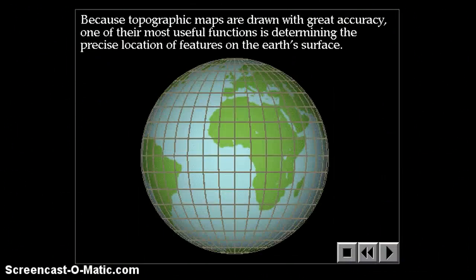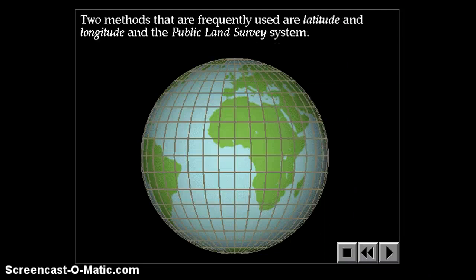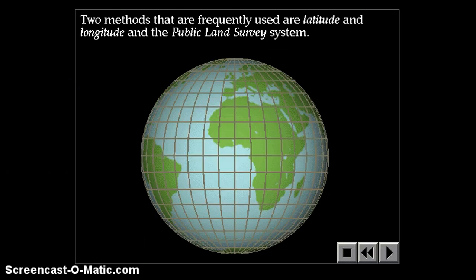Because topographic maps are drawn with great accuracy, one of their most useful functions is determining the precise location of features on the Earth's surface. Two methods that are frequently used are latitude and longitude, and the second method is the public land survey system. In this video we're going to talk about latitude and longitude. The next video we'll discuss the public land survey system.